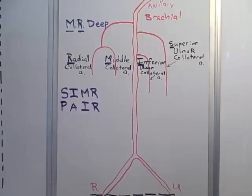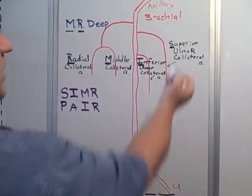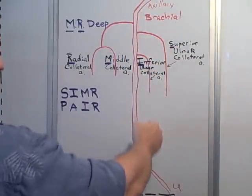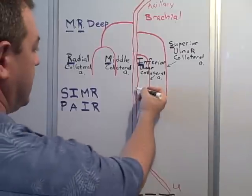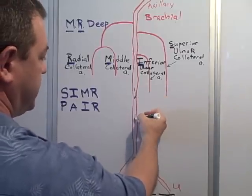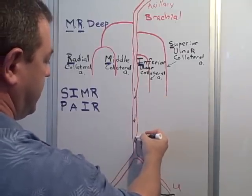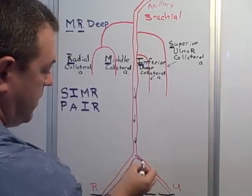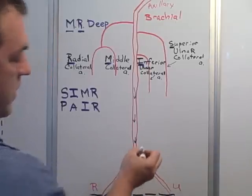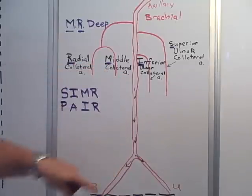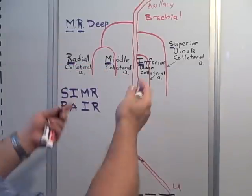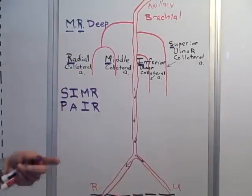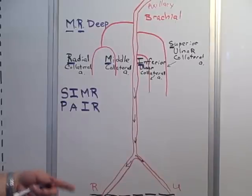The first time you run across the word 'recurrent' it's kind of hard to understand, but the blood is flowing down toward the tips of the fingers — that's going with the current. If any blood turns around and goes back up, I think of that as against the current, or recurrent.